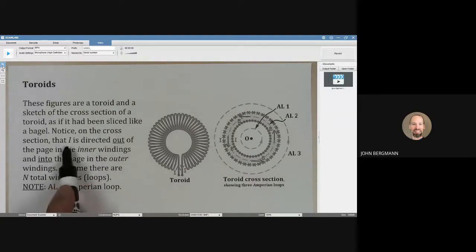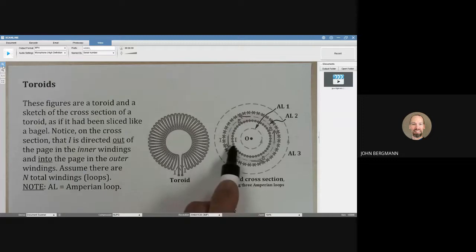Notice on the cross-section that I is directed out of the page in the inner windings that's right here and into the page in the outer windings. Assume that there are n total windings or loops and AL means Amperian loop.